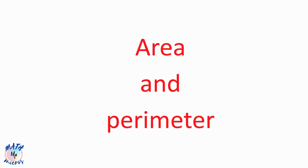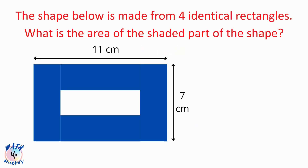Hello! In this video we will discuss two quick problems which are tricky — they seem to be very hard but are actually easy to solve. Those problems are on area and perimeter. The first question: the shape below is made from four identical rectangles. What is the area of the shaded part? For those who want to try on your own, please pause the video now; others please continue watching.